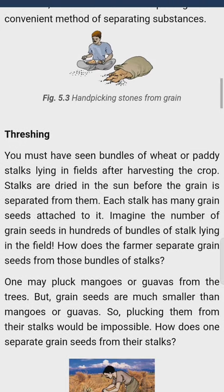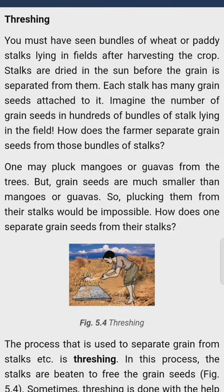Threshing — You must have seen bundles of wheat or paddy stalks lying in fields after harvesting the crop. Stalks are dried in the sun before the grain is separated from them. Each stalk has many grain seeds attached to it. Imagine the number of grain seeds in hundreds of bundles of stalks lying in the field. How does the farmer separate grain seeds from those bundles of stalks? दूसरा method है Threshing। डंडियों से अनाज को अलग करने से पहले उसे धूप में सुखाया जाता है।